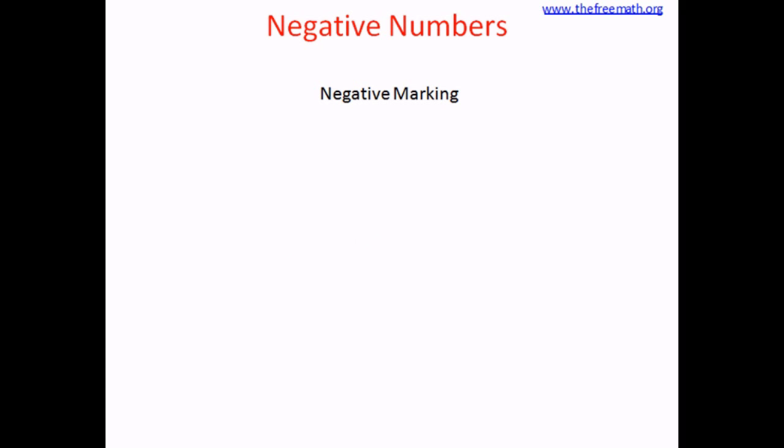Another use of negative numbers is negative marking in competitive examinations. The rules might be: if your answer is correct you get plus 2 marks, but if your answer is wrong, 1 mark is deducted, which is negative 1. It is possible to score negative marks — for example, if you get all 10 answers wrong in a 10-question test, your score would be negative 10.